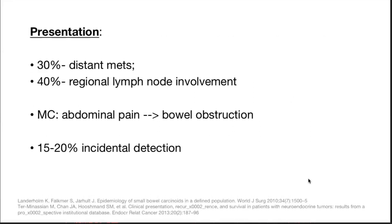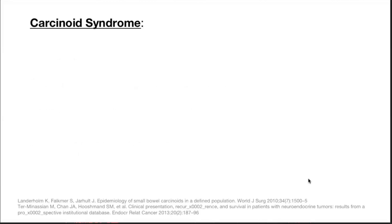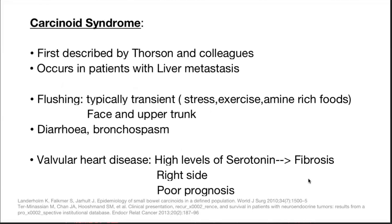Nearly 30% may present with distant metastasis and in 40% there is regional lymph node involvement. Most commonly they present with abdominal pain followed by bowel obstruction. Small bowel and ileocecal neuroendocrine tumors generally give rise to carcinoid syndrome.